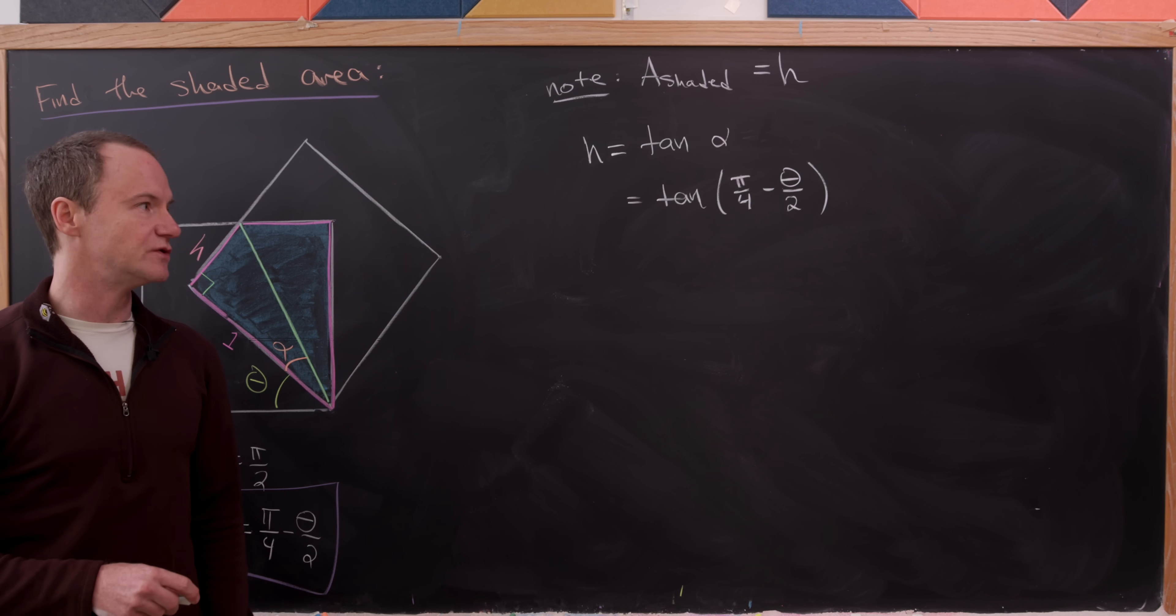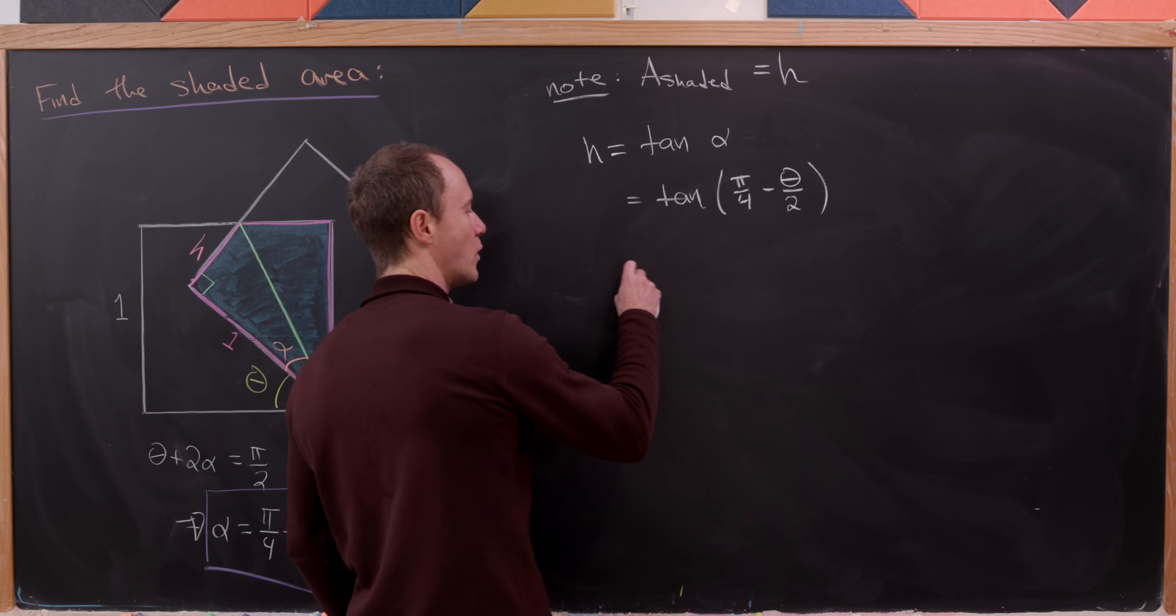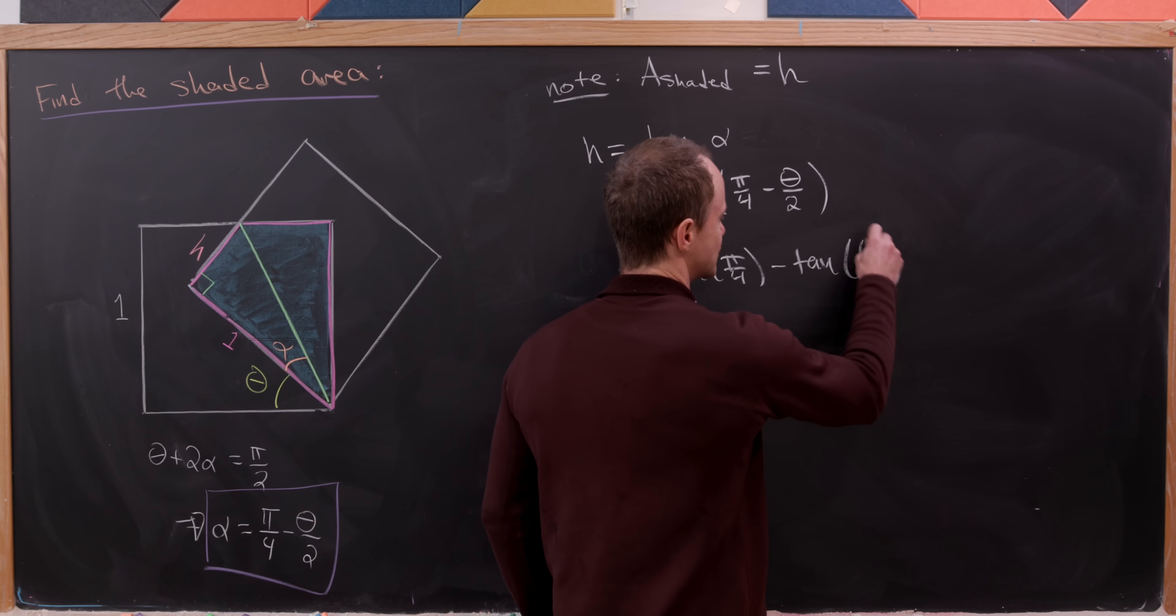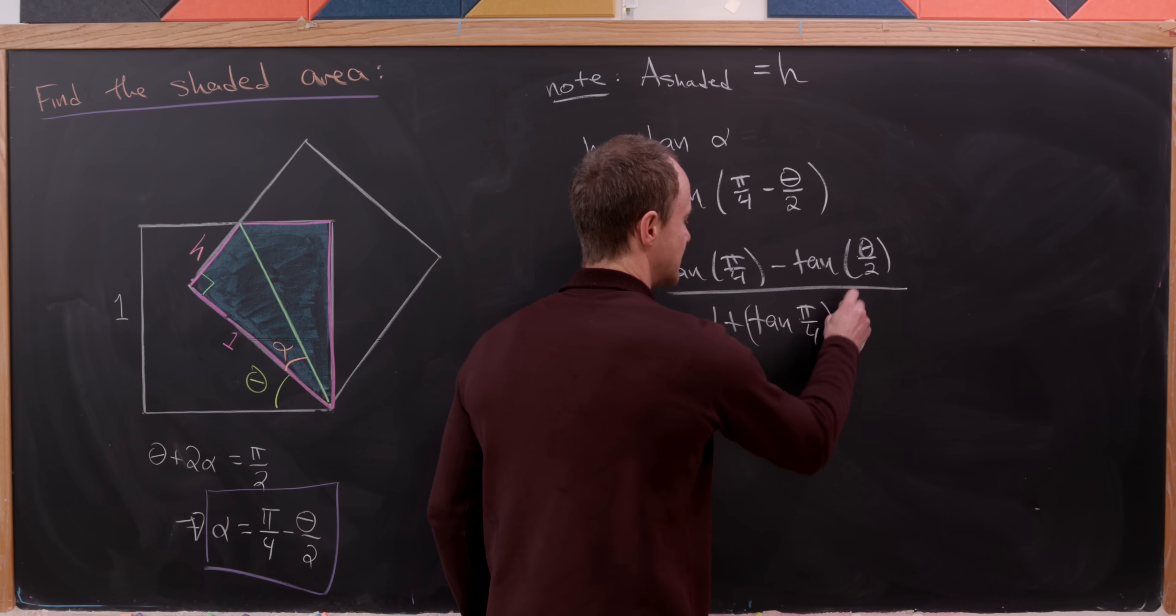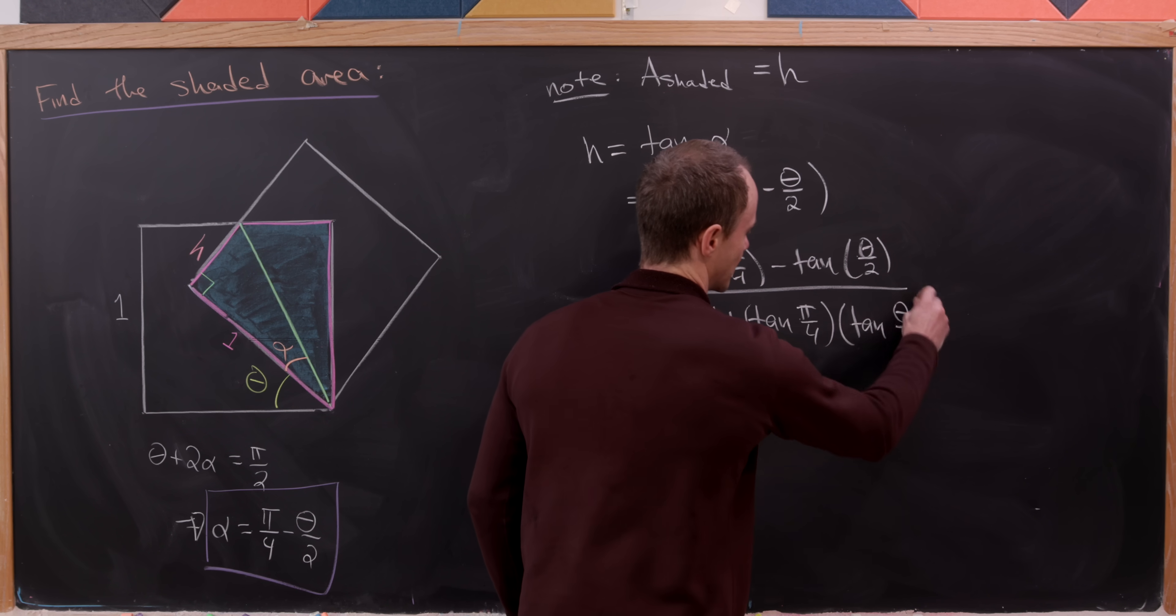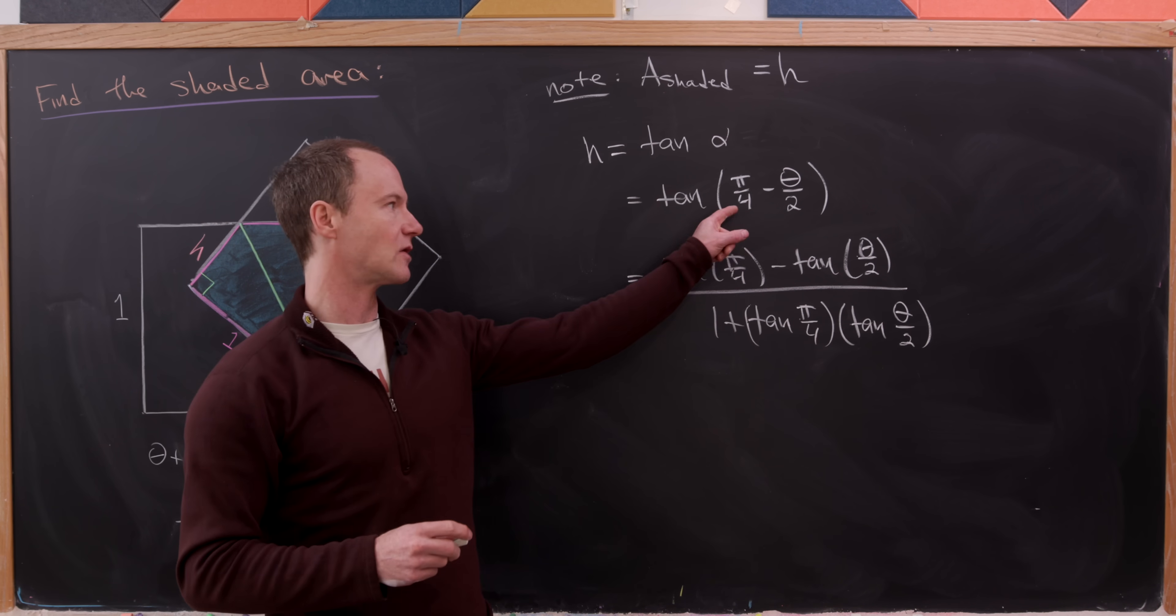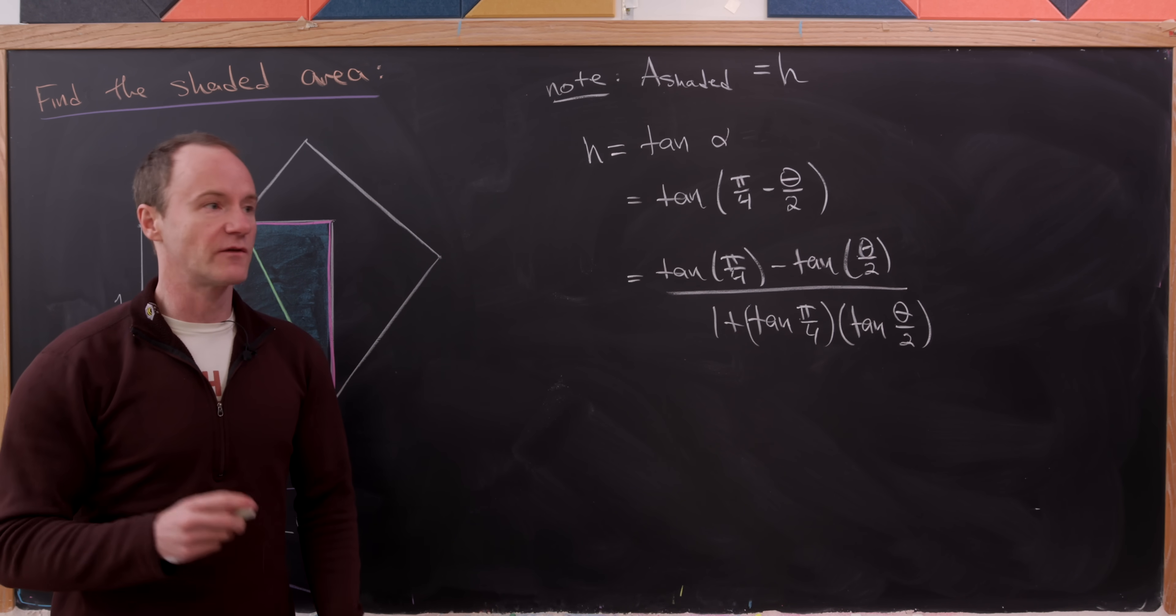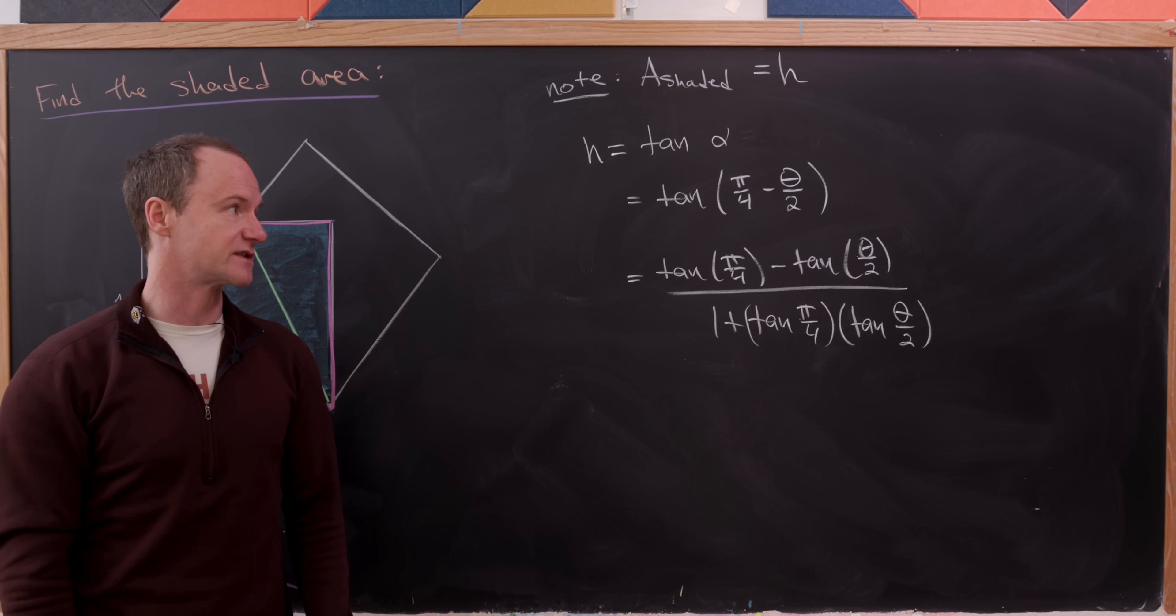And from here what we can do is use the angle sum formula for the tangent function. So I'll let you look up the angle sum formula for the tangent function if you need to. But we'll pretty quickly come up with the tangent of π over 4 minus the tangent of theta over 2 all over 1 plus the tangent of π over 4 times the tangent of theta over 2. So that's going to be either the angle sum formula for tangent where we've got angle π over 4 and then negative theta over 2 or an angle difference formula which of course we know that the tangent is an odd function so it's pretty easy to get this off of the angle sum formula.